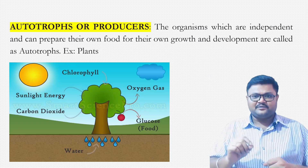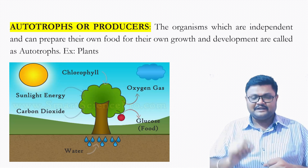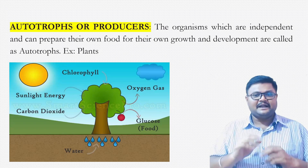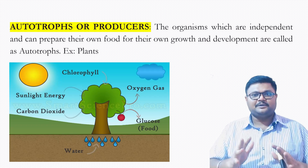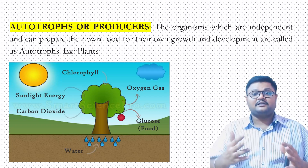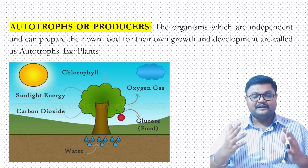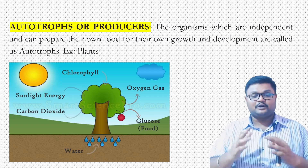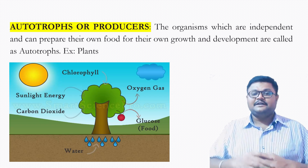These organisms can create their own food for their growth and development and are not at all dependent on other organisms for their growth and development. They are called autotrophs.